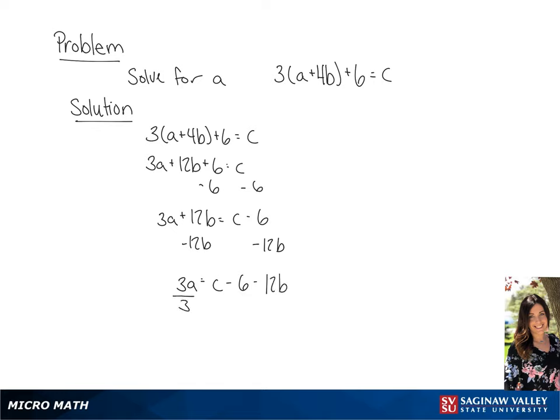The last thing we're going to do is divide each side by 3. This will give us A equals C minus 6 minus 12B all over 3.